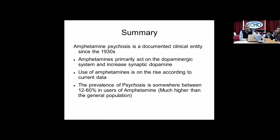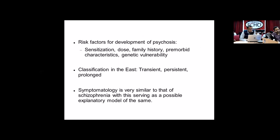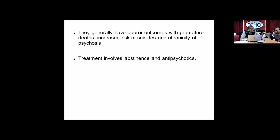To summarize: amphetamine psychosis is a documented clinical entity since the 1930s, primarily acting on the dopaminergic system by increasing synaptic dopamine. Use of amphetamines is on the rise, and the prevalence of psychosis is somewhere between 12 to 60% in users. Risk factors for development include sensitization, dose of amphetamine use, family history, premorbid characteristics, and genetic vulnerability. Classification, as noted in the East, is transient, prolonged, and persistent. Symptomatology is very similar to schizophrenia, hence serving as an explanatory model for the same. Outcomes are generally noted to be poor, with history of premature deaths, increased risk of suicide, and chronicity of psychosis. Treatment involves abstinence and antipsychotics.